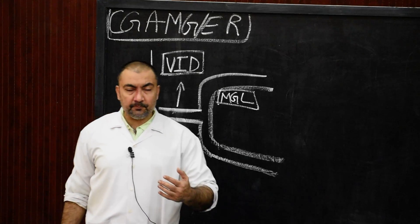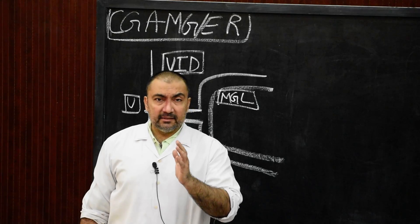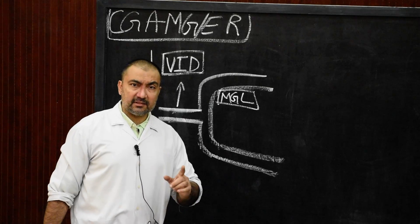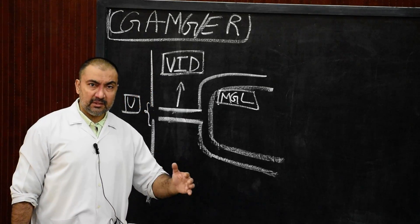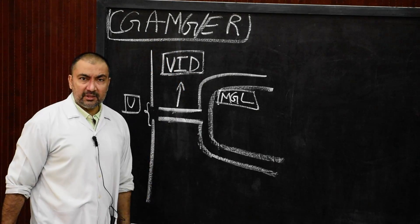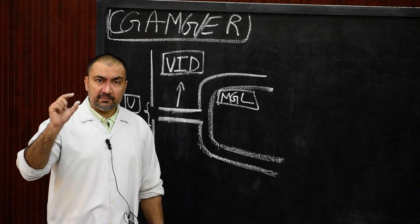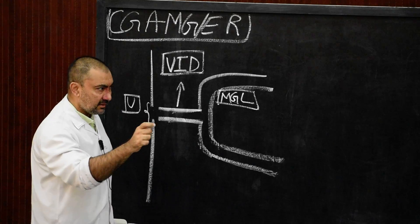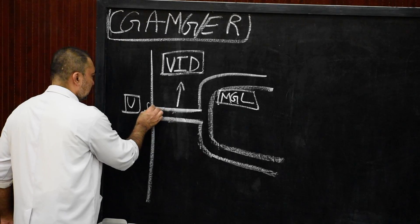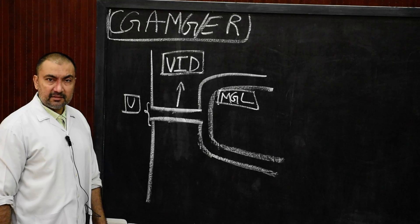Please note that the entire vitelo-intestinal duct will disappear by the sixth week — that is normal embryological development. Sometimes in congenital anomalies of the mid-gut, the entire vitelo-intestinal duct will remain patent. This is known as patent vitelo-intestinal duct, from the apex of the mid-gut loop to the umbilical opening.